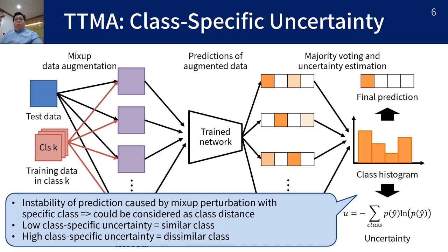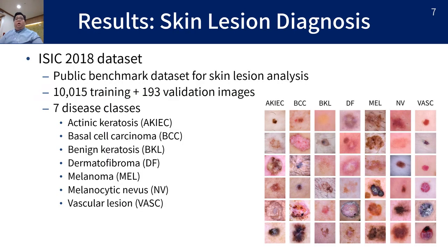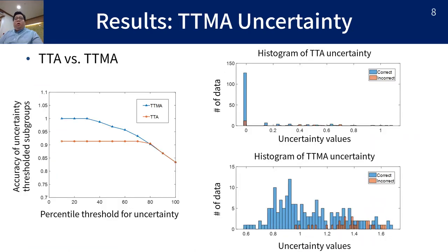We observe whether our hypothesis makes sense through our experiments. To verify the effectiveness of our work, we performed an experiment on a public skin lesion diagnosis dataset. We first compare the proposed test time mixup augmentation for entire classes with the uncertainty of the affine-based test time augmentation.